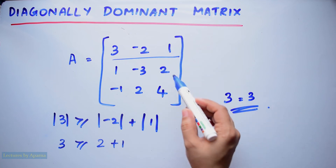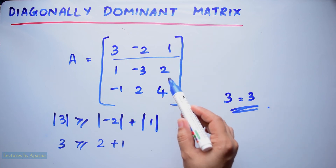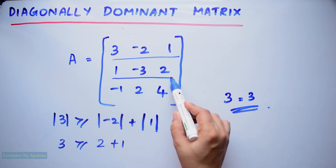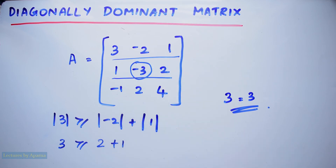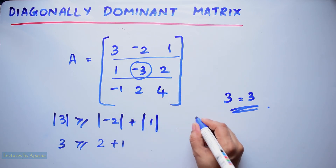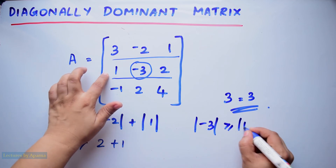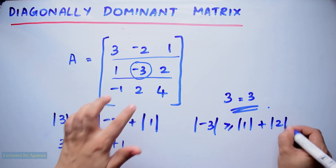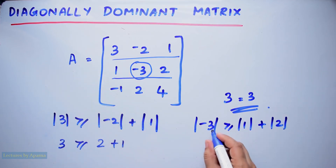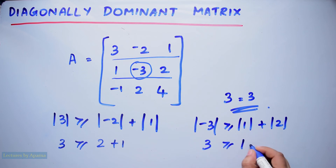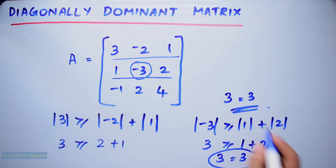Now we check the condition for the second row. In the second row, minus 3 is the diagonal element. We check if modulus of minus 3 is greater than or equal to modulus of 1 plus modulus of 2. Modulus of minus 3 is 3, which is greater than or equal to 1 plus 2 equals 3. Therefore the condition has been satisfied in the second row also.